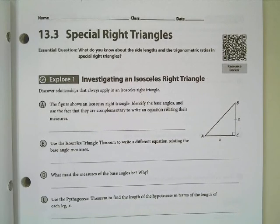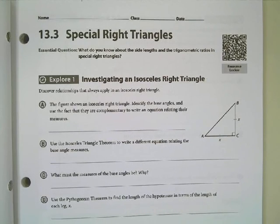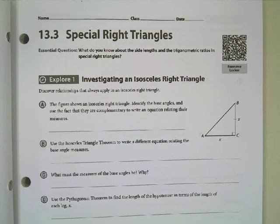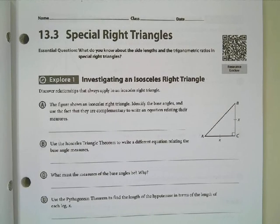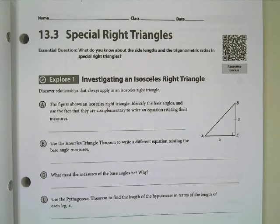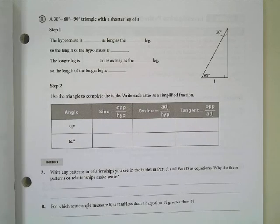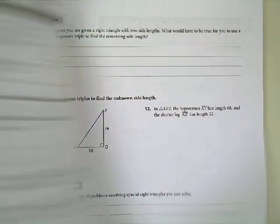What I mean by special right triangles are special relationships that appear for certain kinds of right triangles. The essential question is: what do you know about the side lengths and the trigonometric ratios in special right triangles? We'll worry about the trig ratios in a little bit. For right now, we're just going to worry about finding side lengths.